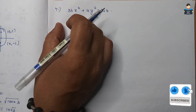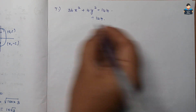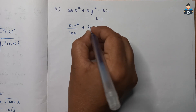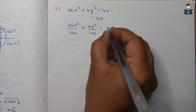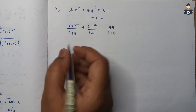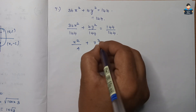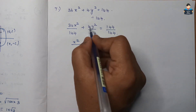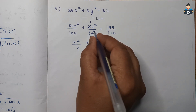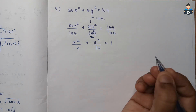So first we bring it to standard equation format. We divide by 144: 36x²/144 + 4y²/144 = 144/144. Solving this, 36 divided by 144 gives x²/4, and 4 divided by 144 gives y²/36, which is equal to 1.